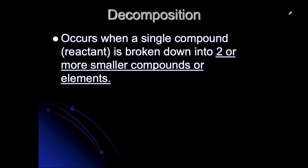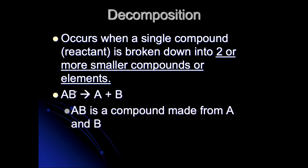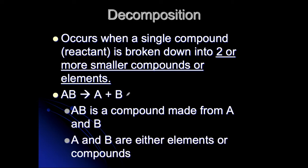The next type of reaction is called decomposition, and it is just that — it decomposes. This happens when you have a single compound, so it's going to be one thing on your reactant side, and it will be broken down into two or more smaller compounds or elements. The general reaction here would be AB yields A plus B. There's no plus sign on your reactant side, but you have a plus sign on your product side. When predicting, you will only predict that it will decompose into its elements.